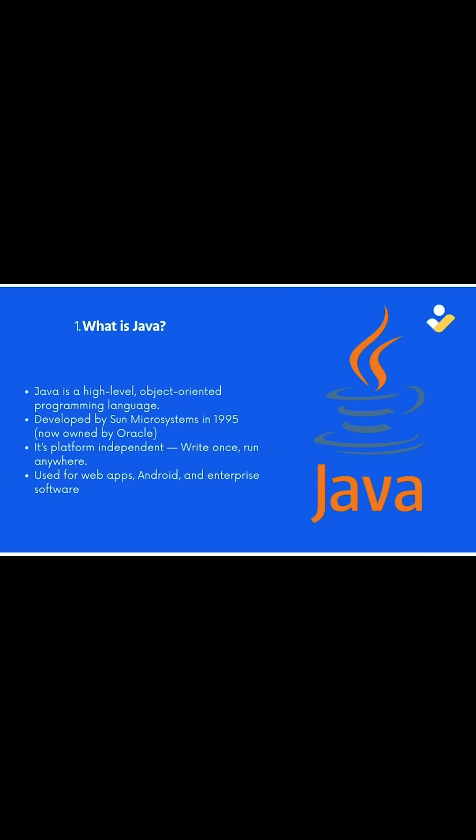First, what is Java? Java is a high-level, object-oriented programming language developed by Sun Microsystems in 1995. It is one of the most popular programming languages, used for web development, backend systems, Android apps, and enterprise software.